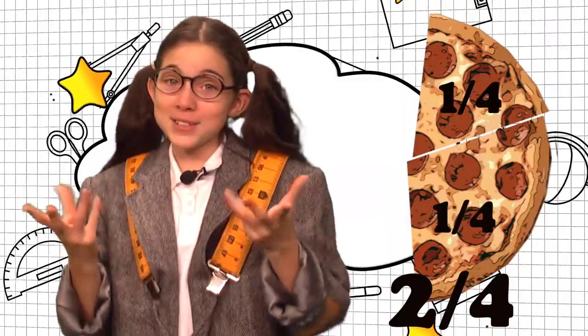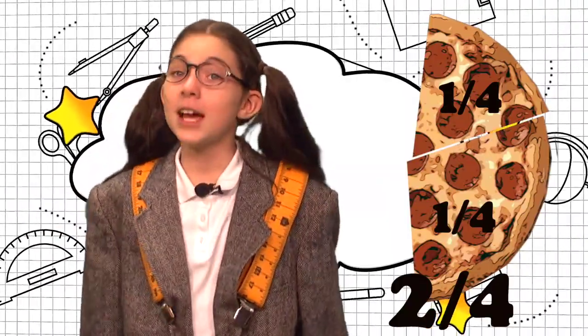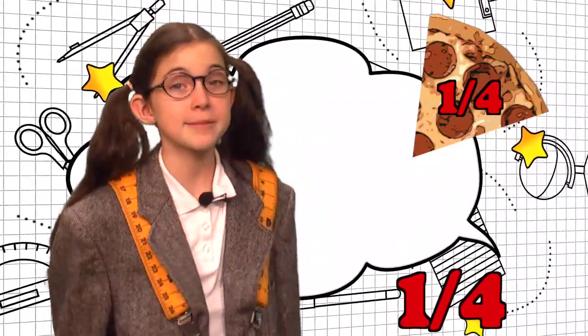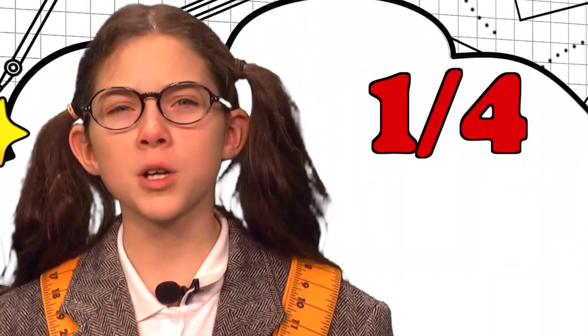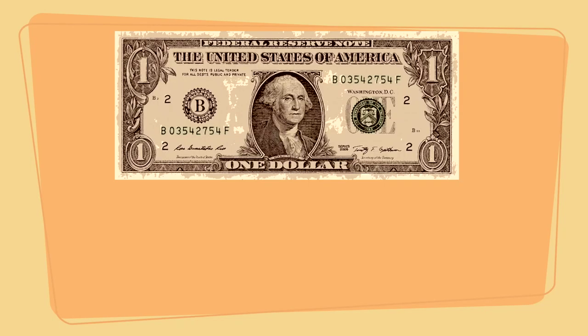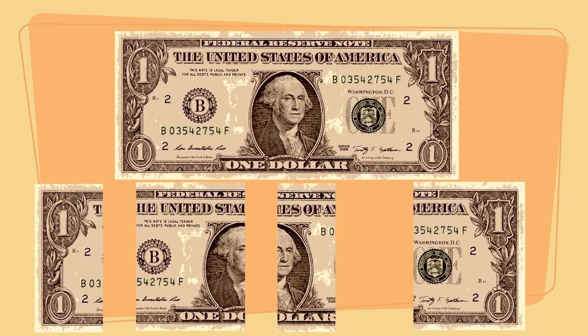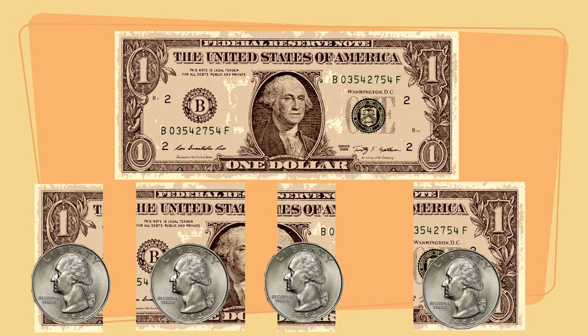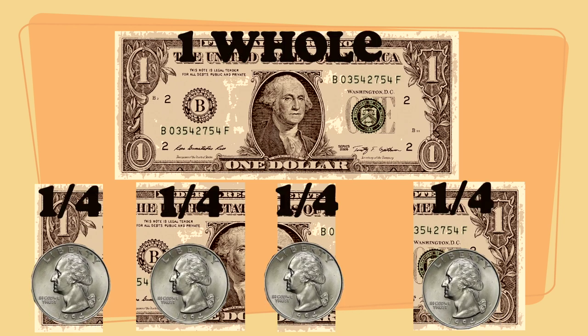Now you know. Back to our example, if we took away one more piece, we would now have one-fourth of the original four pieces. We can also refer to that as one-quarter. Why? Here's a dollar bill. If we divide this into four, we can use four quarters. So one-quarter is the same as one-fourth, because it takes four quarters to equal one whole dollar.